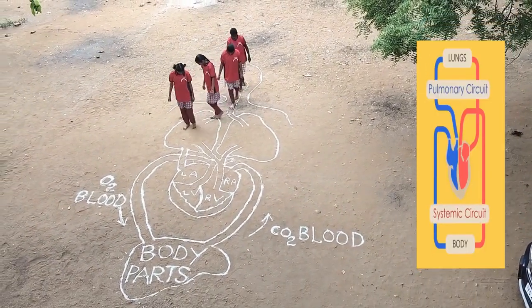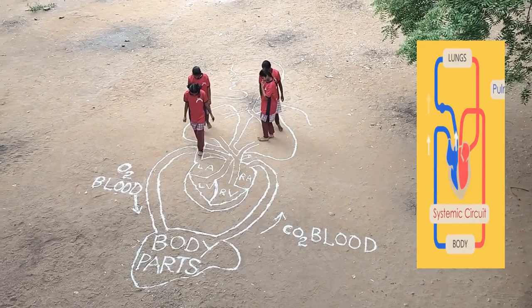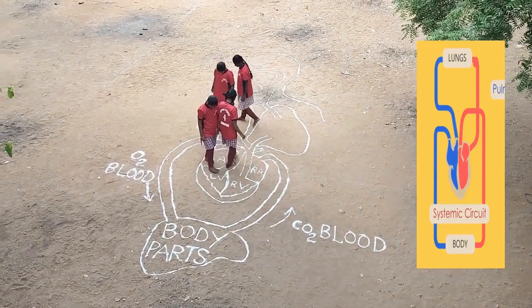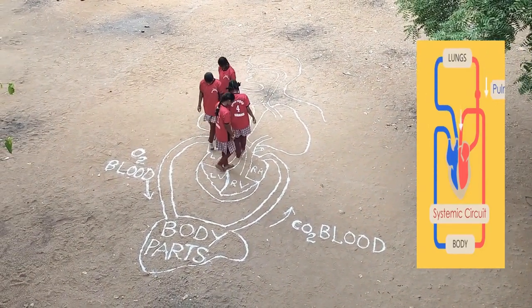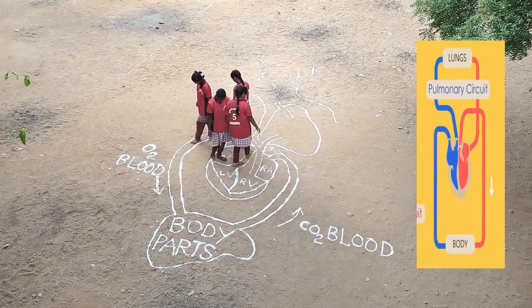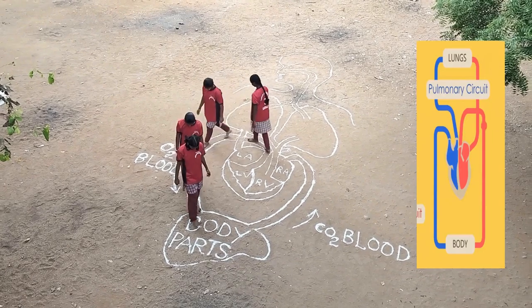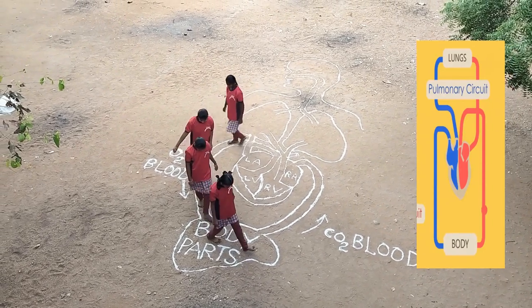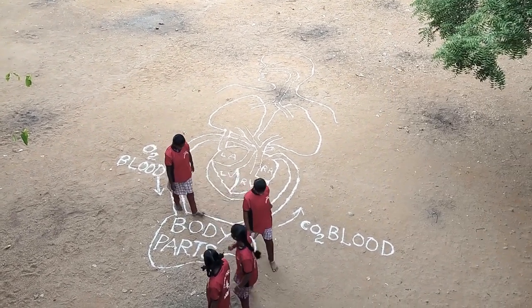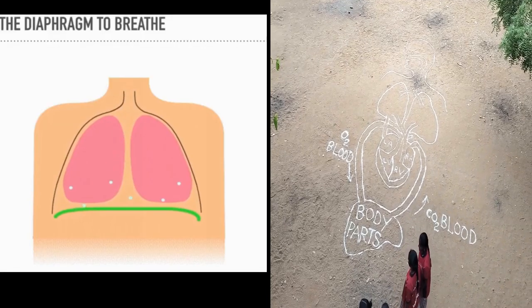Oxygen molecules enter the lungs through inhalation and diffuse into the blood. Blood is then given to the left side of the heart through the pulmonary vein. From the left ventricle, the systemic aorta originates, taking oxygenated blood to various body parts. To complete one circulation, blood flows through the heart twice — that is why it is called double circulation.